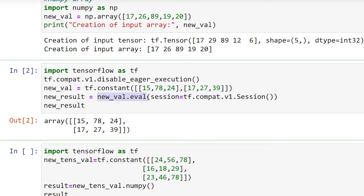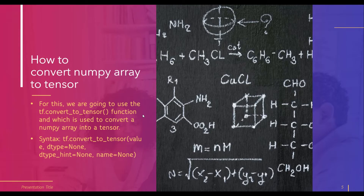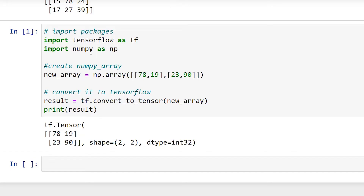To convert a NumPy array into a tensor, we use the tf.convert_to_tensor function. The syntax takes two main parameters: value and dtype. Let's take an example to understand the working of tf.convert_to_tensor.